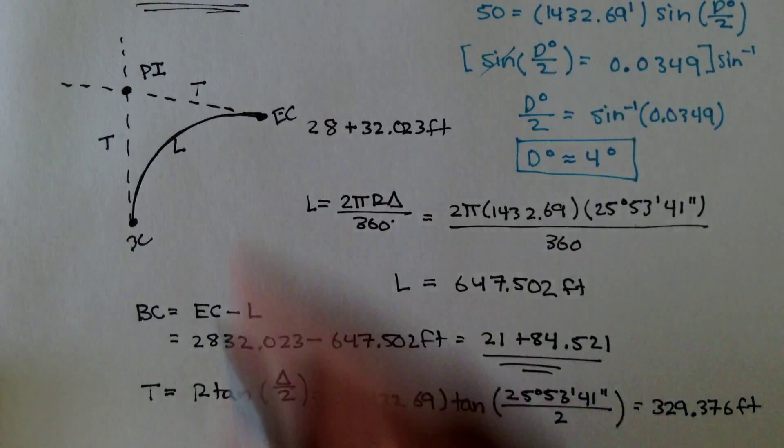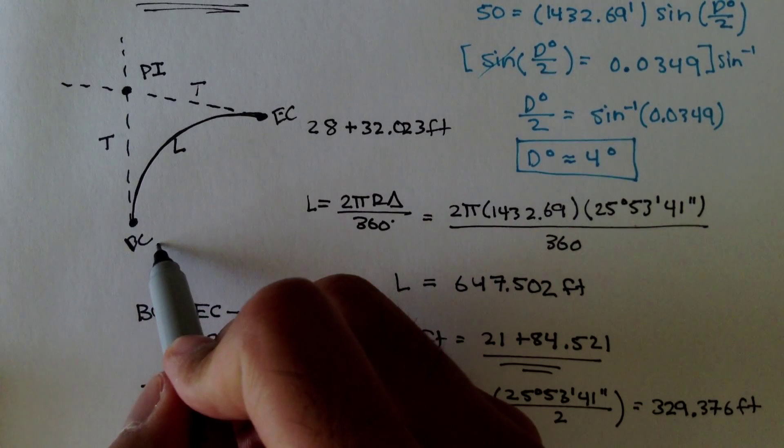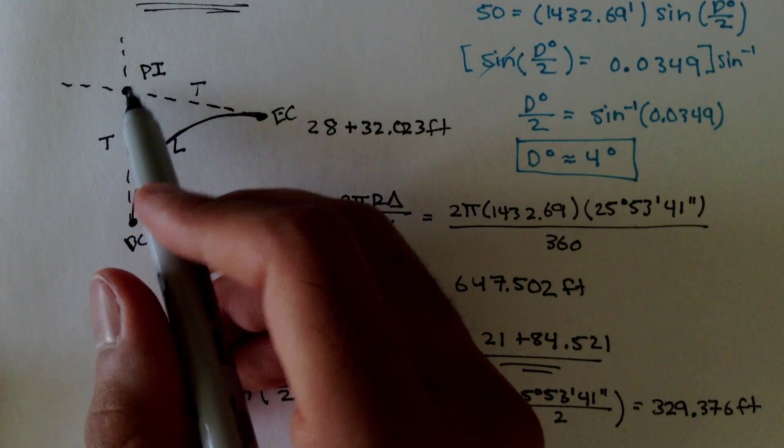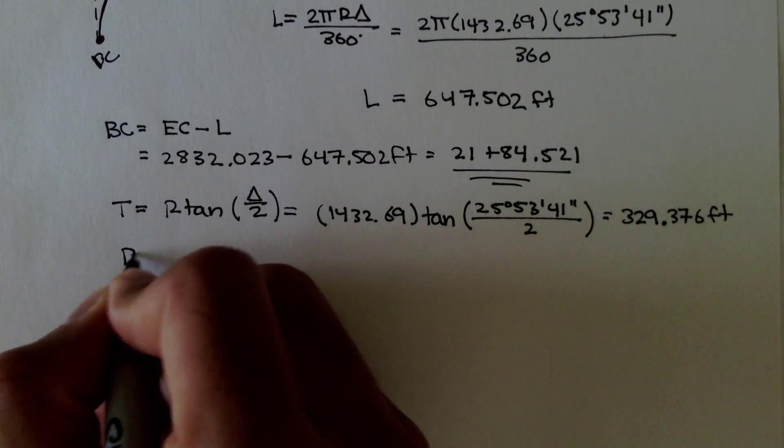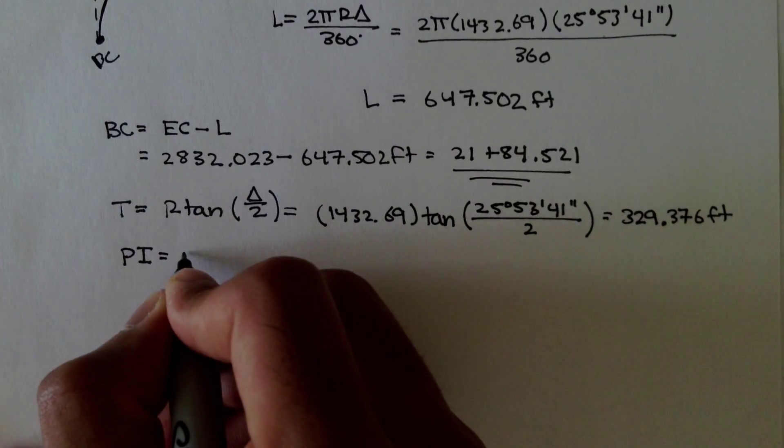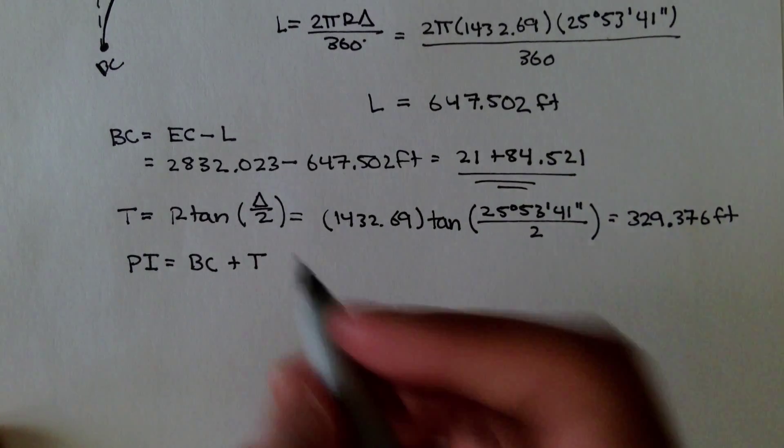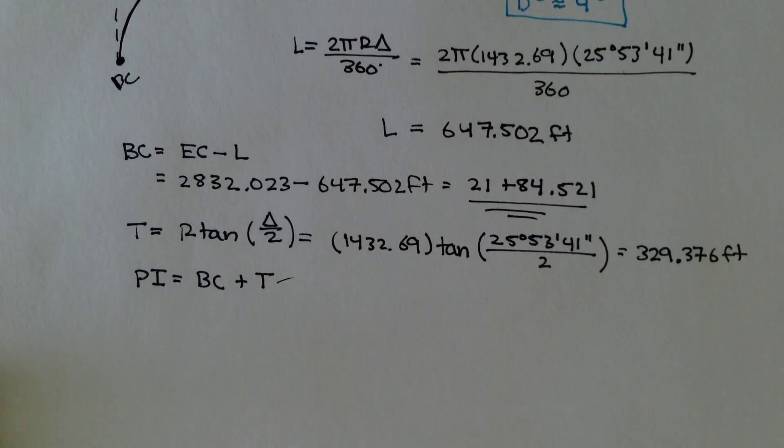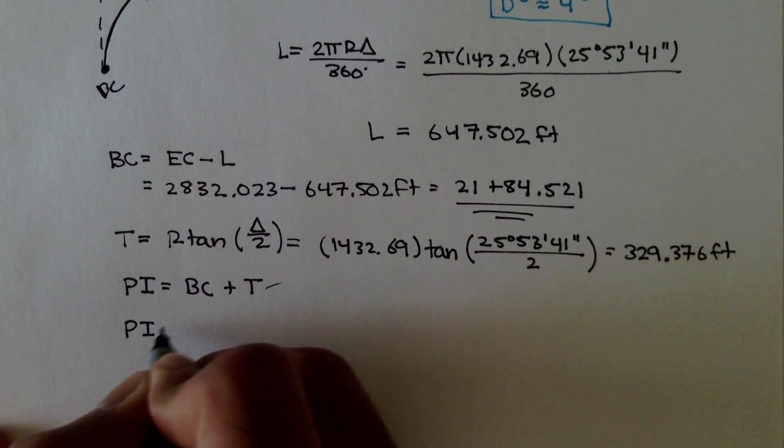And that gives us our station for PI. So, point of intersection is equal to the beginning of curve plus the tangent distance. And we just figured out what t is. We also figured out what BC is. We can add those two values together.